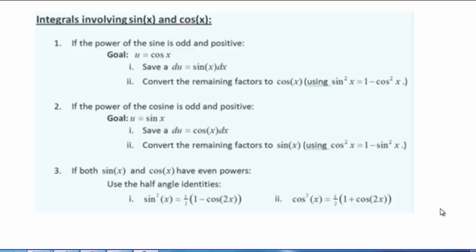If both sine of x and cosine of x have even powers, then we need to use the half angle identities. These are sine squared of x equals one half times the quantity one minus cosine of 2x or cosine squared of x equals one half times the quantity one plus cosine of 2x.